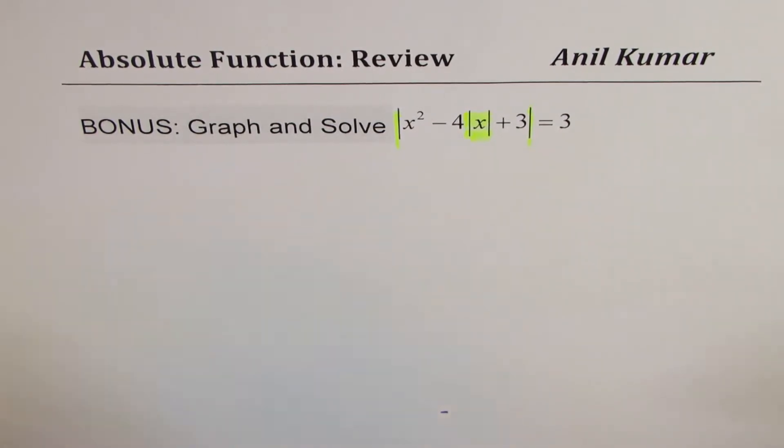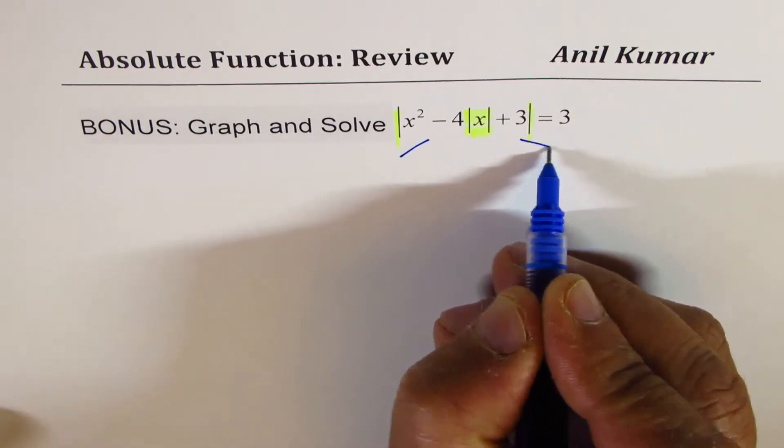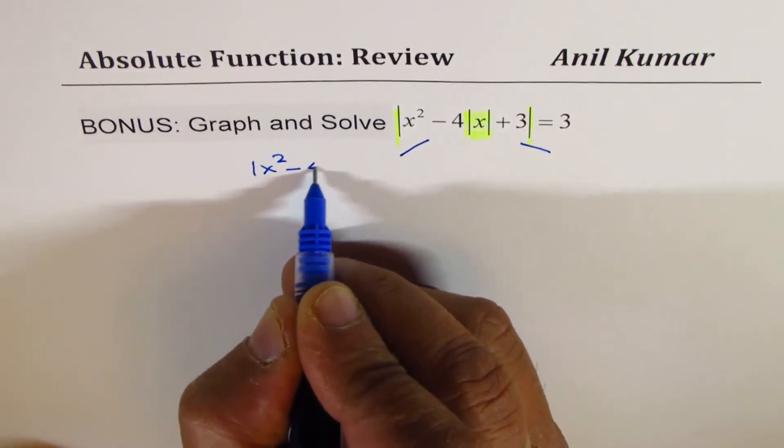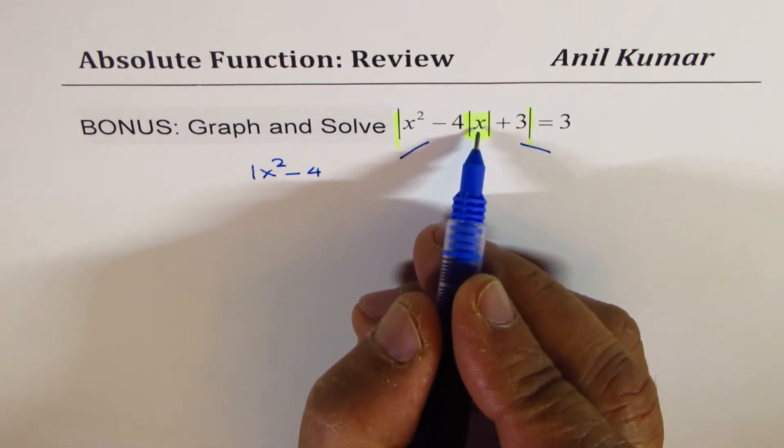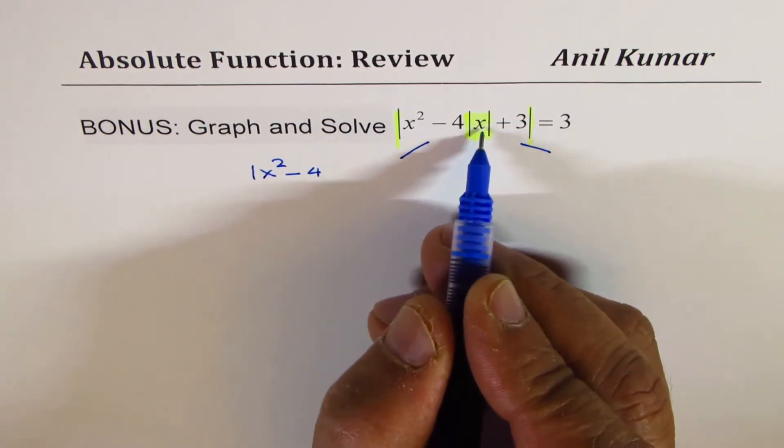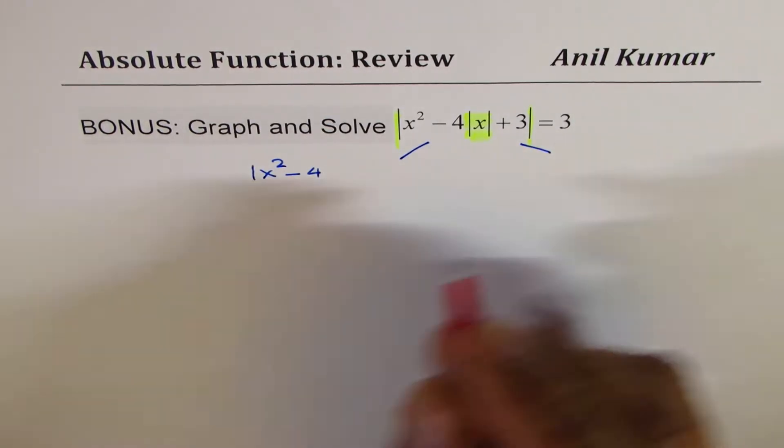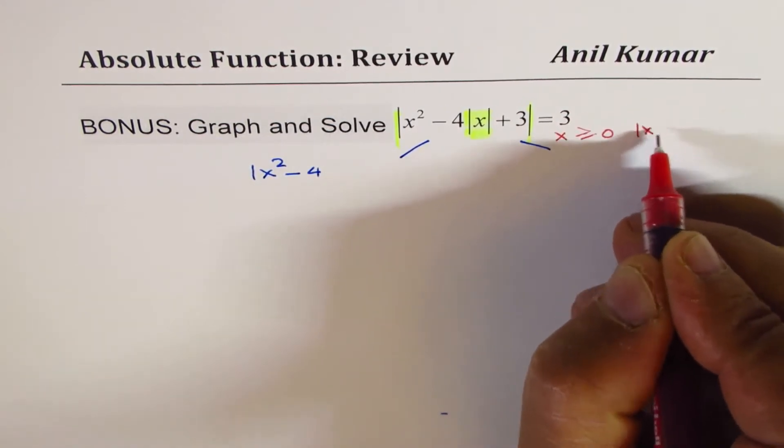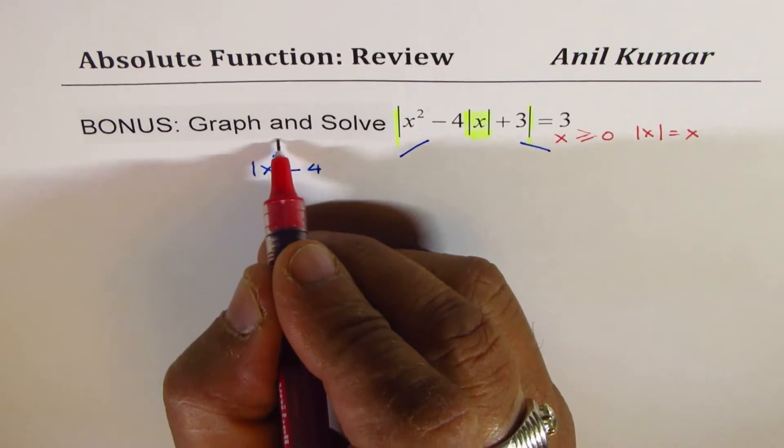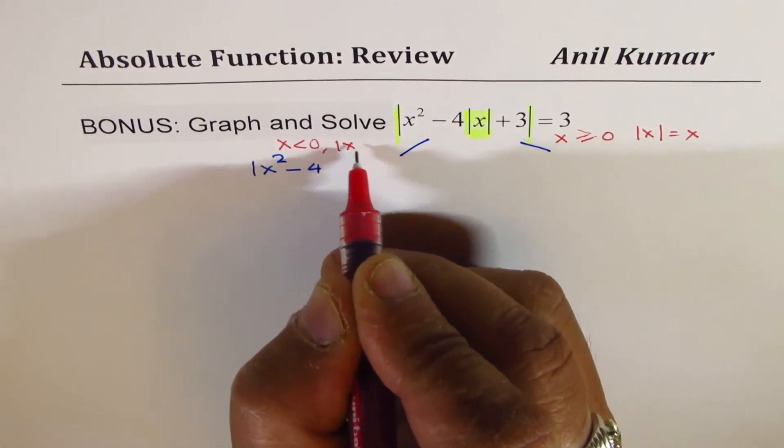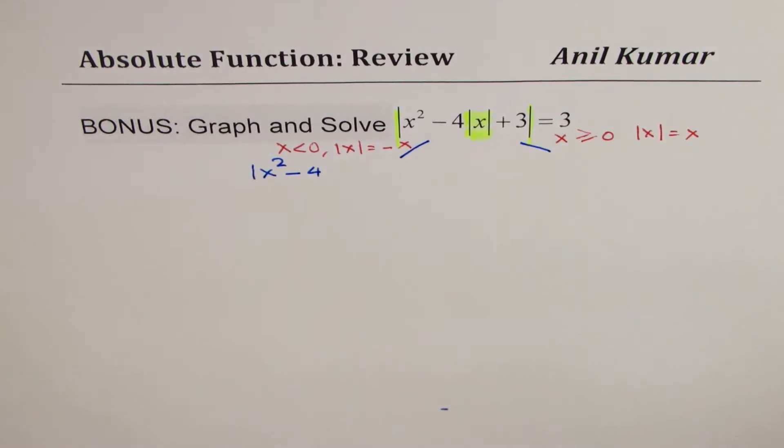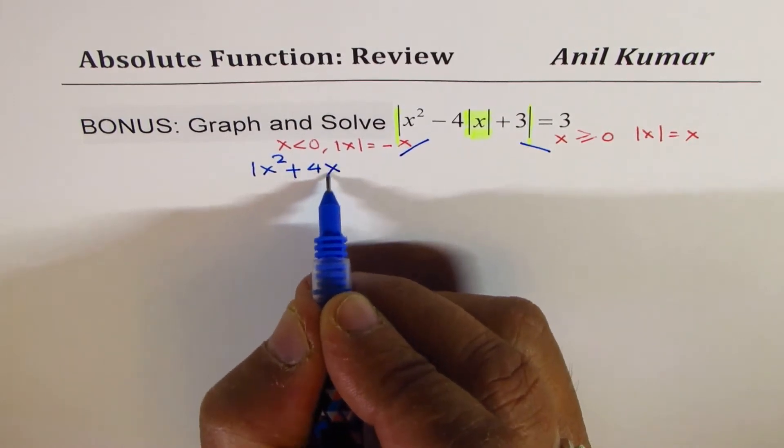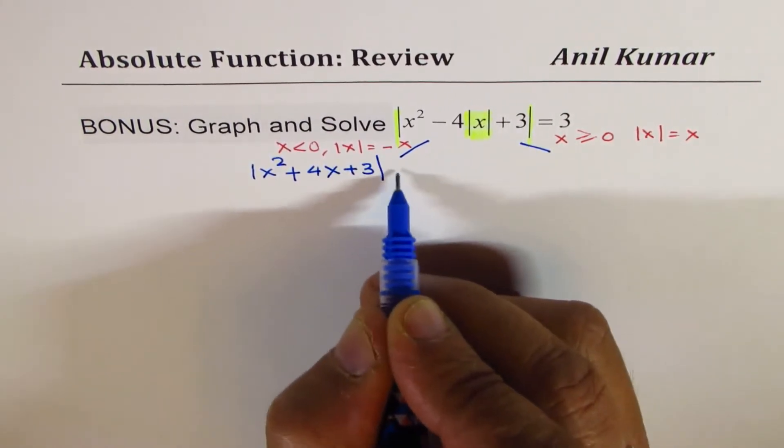Now in such questions, what you could do is, you could rewrite this as two different equations. You could write this as absolute value of x squared minus 4. When x is positive, it will be positive x. So let's write down the two conditions. When x is greater than or equal to 0, in that case, absolute value of x is equal to x. But if x is less than 0, then absolute value of x is equal to minus x. So that gives us two different equations, correct? So if I make it minus x, it becomes plus 4x plus 3, absolute value equals to 3.